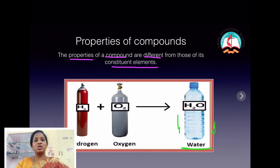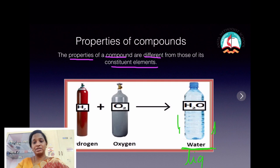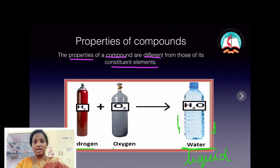The constituent elements that make up water — hydrogen and oxygen — are gases at room temperature. So the properties of the compound are different from those of its constituent elements; the constituent elements are gases, but the compound they form is liquid at room temperature.